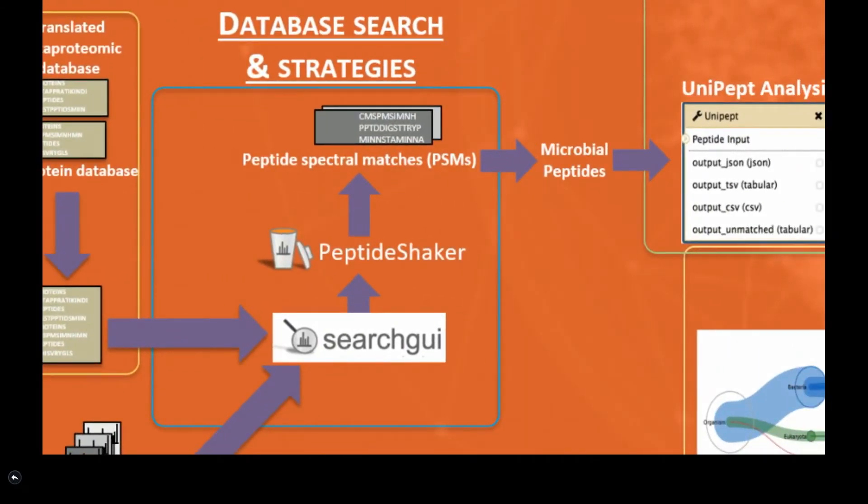Second, database search strategies include software tools required for matching MS/MS spectra to peptide sequences contained in large databases.